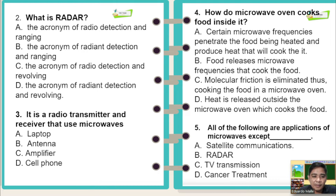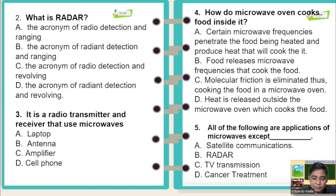For number three: it is a radio transmitter and receiver that uses microwaves. A: laptop. B: antenna. C: amplifier. D: cell phone. The correct answer is letter D, cell phone.